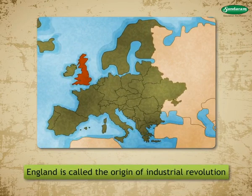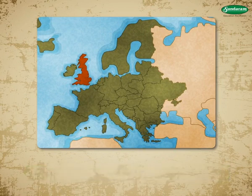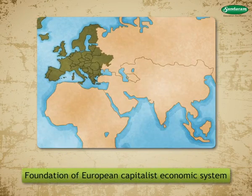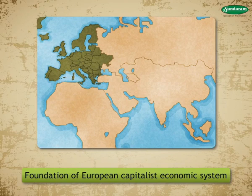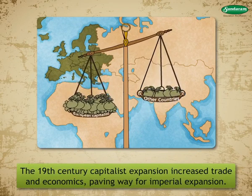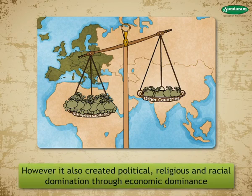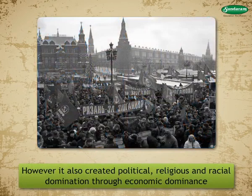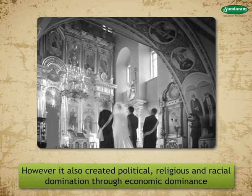England, which was the first to witness the industrial revolution, was followed by the other European nations. All these nations flourished and laid the foundation of the European capitalist economic system. The 19th century capitalist expansion increased trade and economics, paving the way for imperial expansion. However, it also created political, religious, and racial domination through economic dominance.